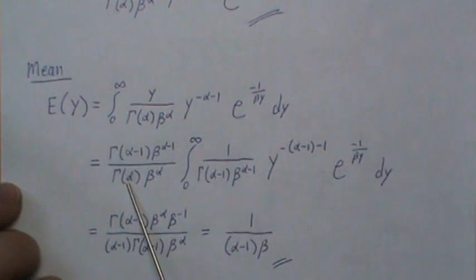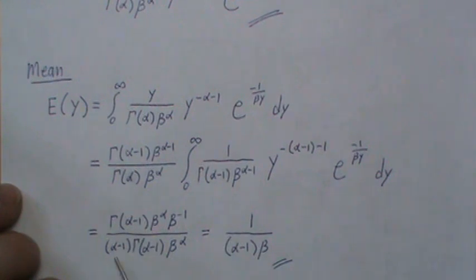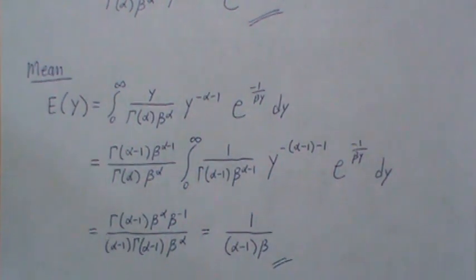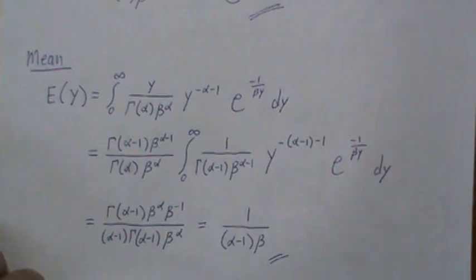Now, gamma of alpha is alpha minus 1 times gamma of alpha minus 1, and you can separate the beta of the alpha minus 1 into this. So we get some cancellations, and we get 1 over alpha minus 1 times beta. And that's the mean.